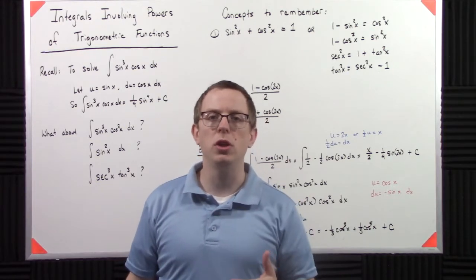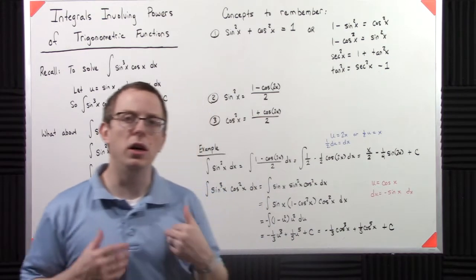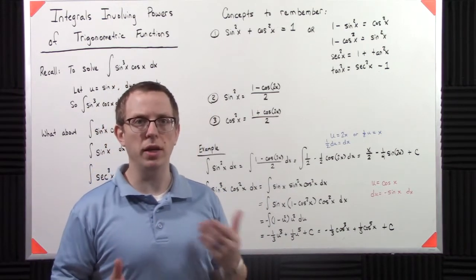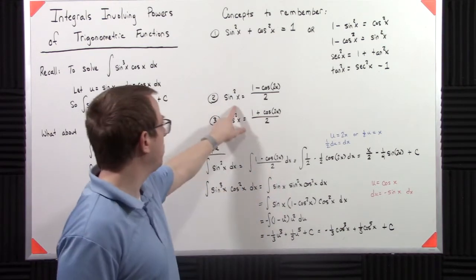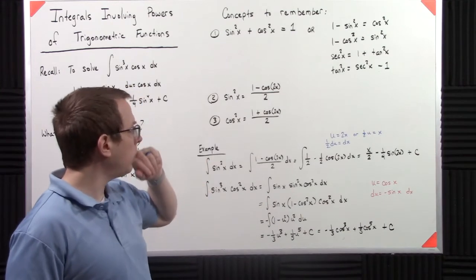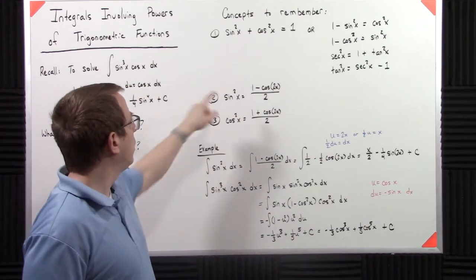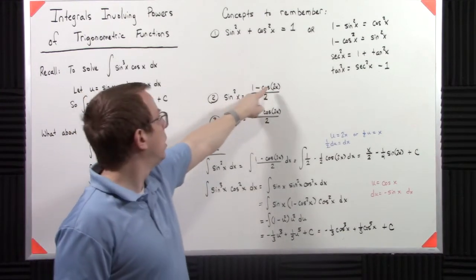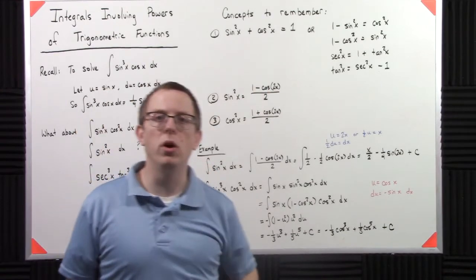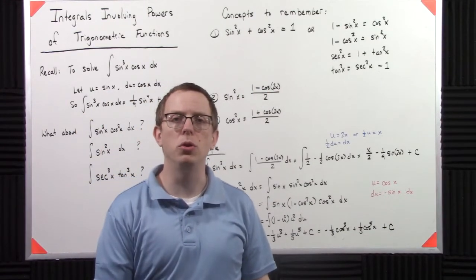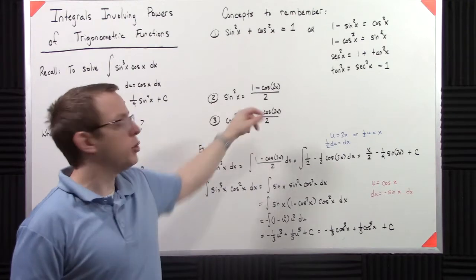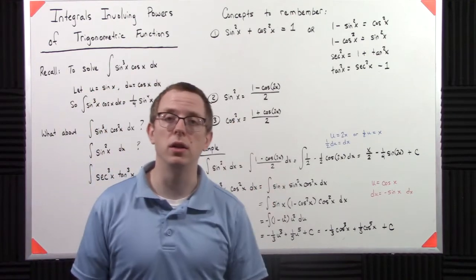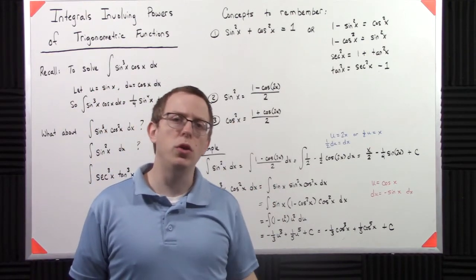The other two big ones that you're going to deal with are the double angle or half angle identities, depending on however you look at it. You take sine squared x and you convert it to 1 minus cosine of 2x over 2. You take cosine squared x, you get 1 plus cosine 2x over 2. Those come up a lot.